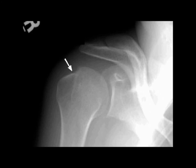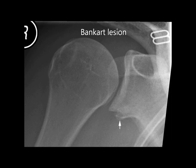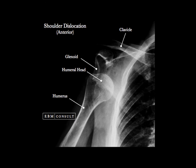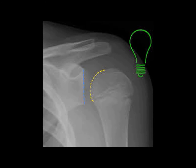When interpreting the X-ray, comment on the direction of dislocation and look for other associated features such as the Hill-Sachs lesion, bony Bankart lesions, humeral as well as clavicular fractures. In anterior dislocations, the humeral head is displaced medially and overlies the glenoid cavity, as shown. Posterior dislocations are diagnosed by the presence of the light bulb sign, as seen on the AP view.